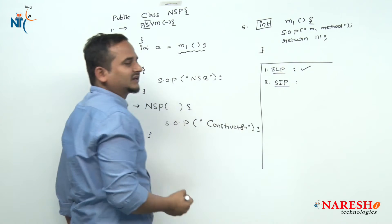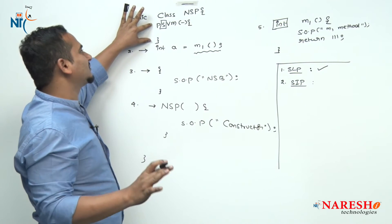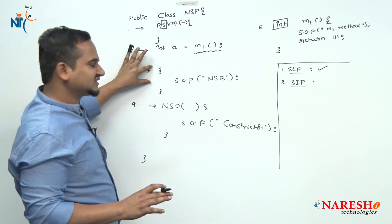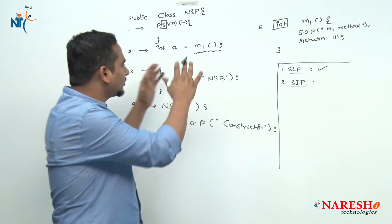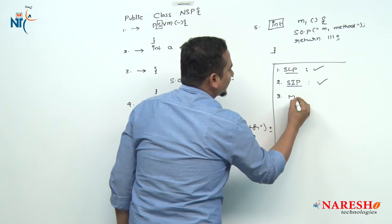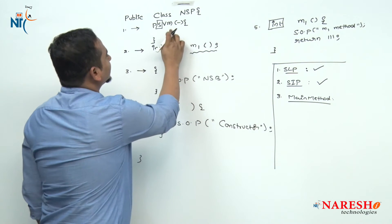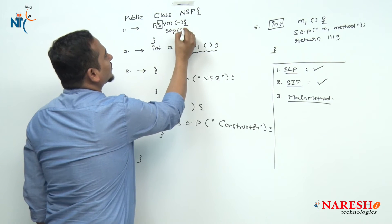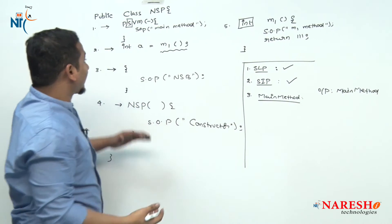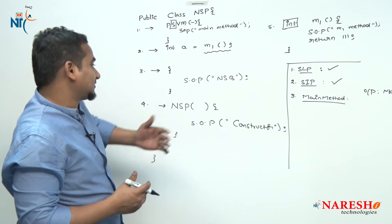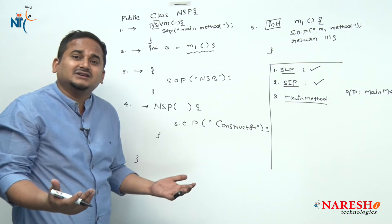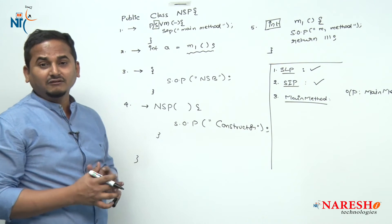Then control goes to the static initialization phase. In the static initialization phase, no method will be executed — so the main method is not executed here. All the non-static elements (variable, block, constructor, method) are also skipped. Once the static initialization phase completes, control goes to the main method. In the main method I am writing System.out.println with "main", so the output is "main". But we also have non-static variable, non-static block, constructor, and non-static method — why aren't these executing? Because non-static data is loaded and initialized only during object creation.